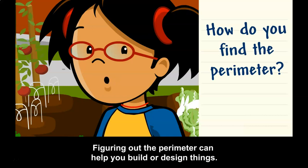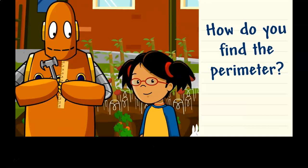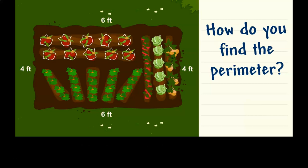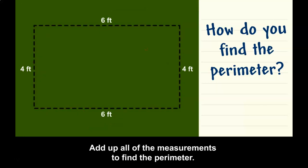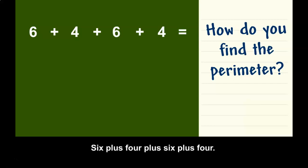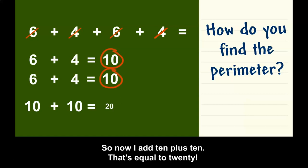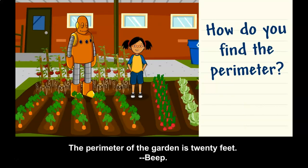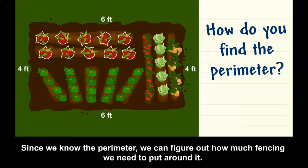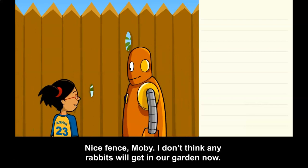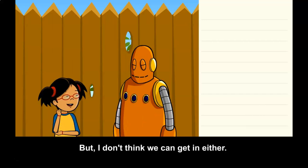Figuring out the perimeter can help you build or design things. We want to build a fence that goes around our class garden. The garden is 6 feet wide and 4 feet long. Add up all of the measurements: 6 plus 4 plus 6 plus 4. I know 6 plus 4 makes 10, so 10 plus 10 equals 20. The perimeter of the garden is 20 feet. Since we know the perimeter, we can figure out how much fencing we need. Then we can keep the rabbits out.